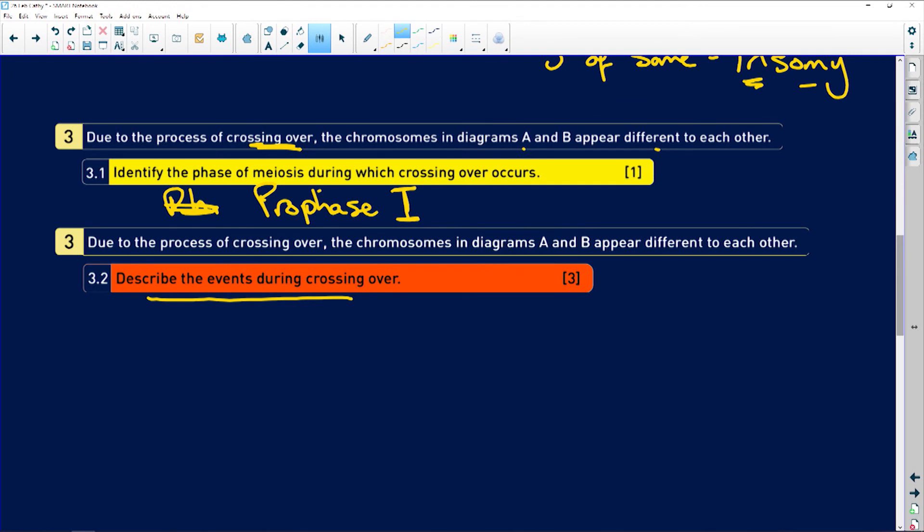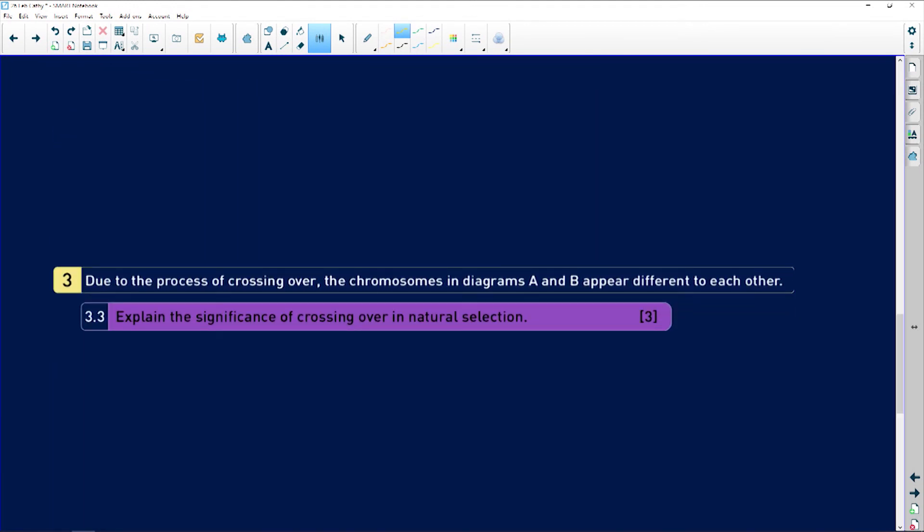So what is the significance of crossing over in natural selection? The minute there is crossing over, we are going to have genetic variation. If it's genetic variation for advantageous or good characteristics, the organism will survive. It will help it to survive. And that's great because then it can continue to reproduce. If those characteristics are not great, well, what happens? The organism dies and they can't pass those characteristics on to the next generation.